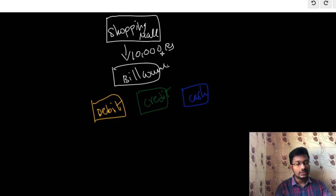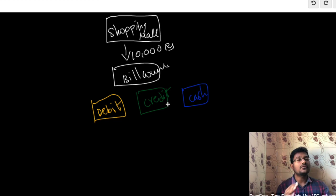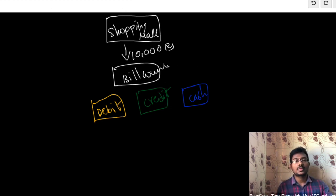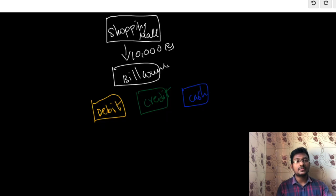Here there are three solutions and the client can choose the best solution based on various criteria at runtime, so that the solution is optimal. This is exactly what the strategy design pattern states: it is used when there are multiple algorithms for a specific task and the client decides the actual needed implementation. In our example, debit card, credit card, and cash are each one of the solutions.